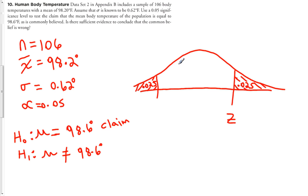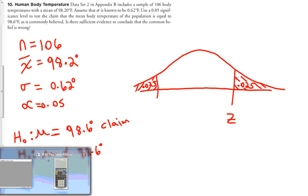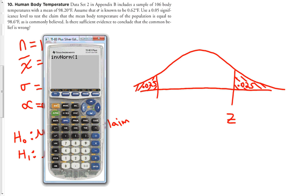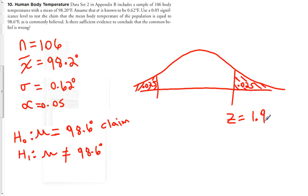Using the TI-83, we go to 2nd, Distributions, and choose Inverse Normal for 1 minus 0.025. The critical Z turns out to be 1.96. So anything above 1.96 is unusually large and leads to rejecting the null hypothesis. By symmetry, anything below negative 1.96 also falls in the rejection region.